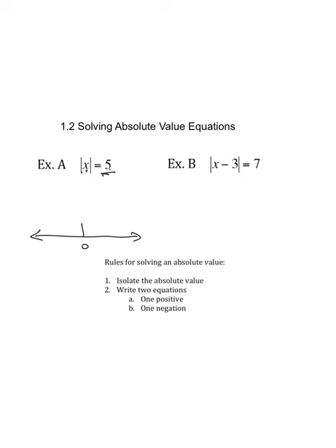These are the two numbers that are 5 units away from 0. Hence, the solution to this equation is x equals 5 and x equals negative 5.